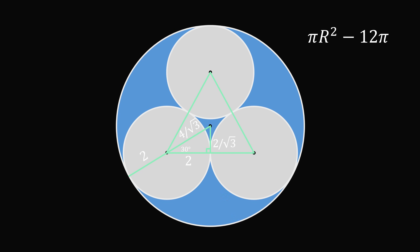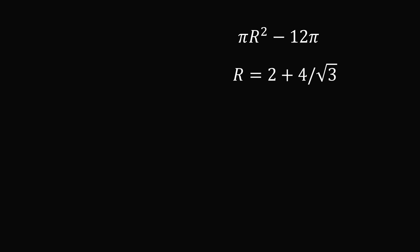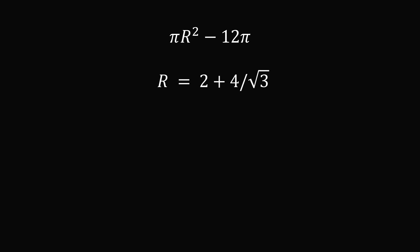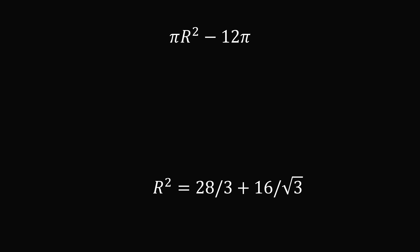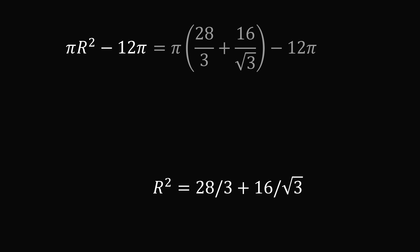We know that the radius of the small circle is equal to 2, which means the other leg will be equal to 2 divided by the square root of 3. This means the hypotenuse of this triangle is twice that, which is 4 divided by the square root of 3. Then the radius of the small circle is equal to 2, which means the radius of the large circle is 2 plus 4 divided by the square root of 3. So we've solved for the radius of the large circle. We simply need to square it and then simplify.